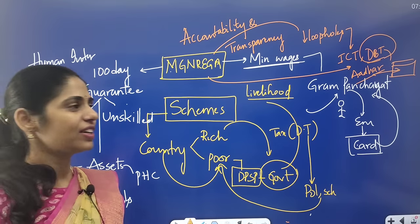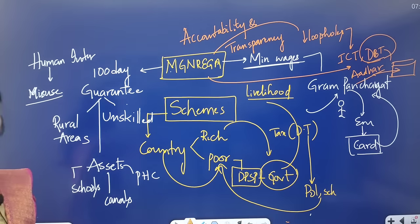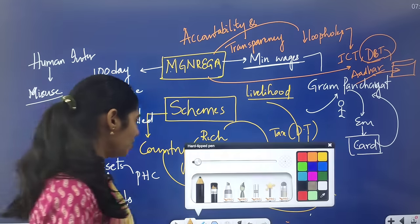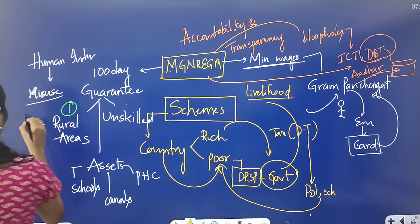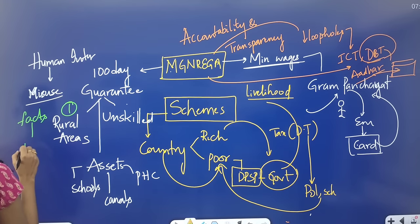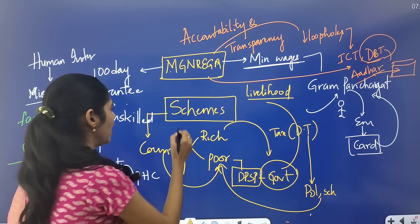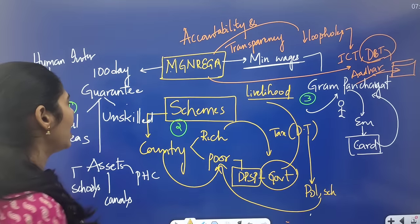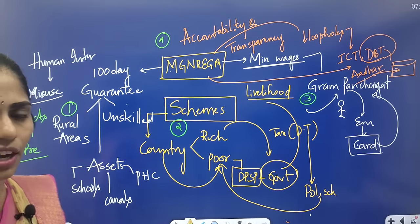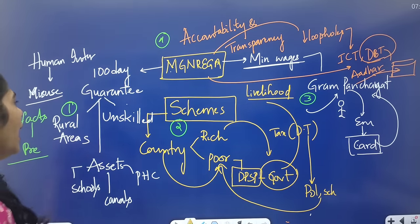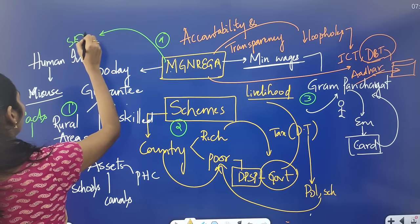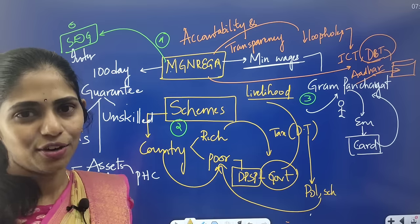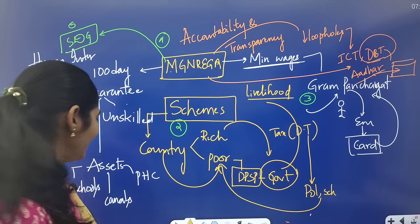You have to see what is Aadhaar-based payment system and what are its advantages. The important dimensions here: first, know the facts for prelims; second, understand the scheme; third, the role of Gram Panchayats; fourth, connect it with good governance — accountability and transparency from ethics; fifth, how it helps achieve Sustainable Development Goals.